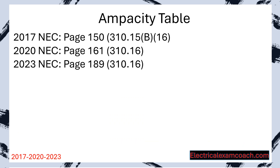Now let's learn about our primary ampacity table. If you're in the 2017 NEC, it's Table 310.15B16. In the 2020 and later, it's Table 310.16. Same information, new name. The most important thing is to read the title of the table and make sure that it matches the actual table number.